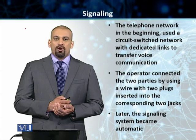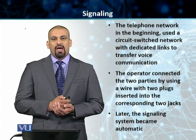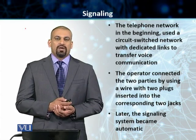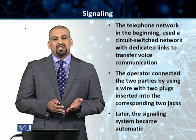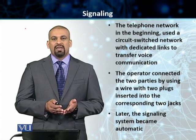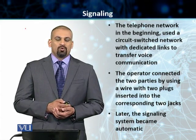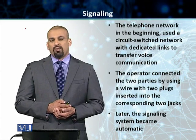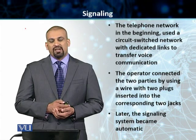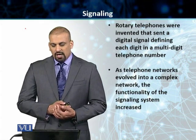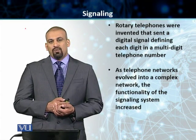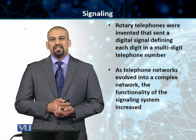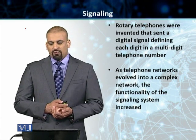Our initial signaling networks were analog, they were manual, and they carried data on the same network as well. With technical advancements, these signaling networks then became automatic. Today, pretty much all of our signaling is done automatically — there is nothing manual to do with a signaling network in a telephone network. Rotary telephones were invented, and these sent a digital signal defining each digit in a multi-digit telephone number.